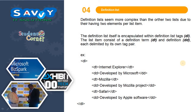The last one is definition list. Definition lists seem more complex than the other two lists due to their having two elements per list item. The definition list itself is encapsulated within the DL tag. Each list item consists of a definition term using DT and a definition using DD, each delimited by its own tag pair.